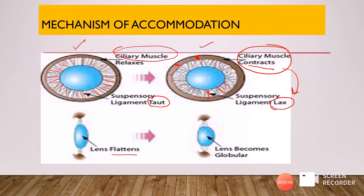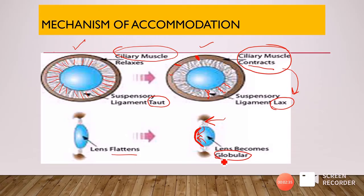As the tautness from the suspensory ligaments is lost during accommodation and laxity comes, the lens is free to move forward. The lens moves forward and the anterior capsule also moves forward, so that the anterior convexity of the lens increases and the lens becomes globular. As the lens becomes globular, convexity increases, converging power increases, and the lens can now focus the diverging rays onto the retina. This is the process of accommodation, in which the ciliary muscle is very important.